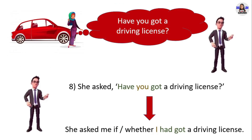Next example: 'Have you got a driving license?' She asked 'Have you got a driving license?' in direct speech. In reported speech, she asked me if I had got a driving license. This question is also a yes/no question. You can use either 'if' or 'whether.' 'Have you got' in present simple changes into 'had got' in past simple. 'You' changes into 'I.'